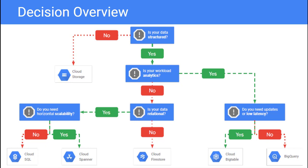Otherwise, check whether your data is relational. If it is not relational, choose Cloud Firestore. If it is relational, you will want to choose Cloud SQL or Cloud Spanner depending on horizontal scalability.